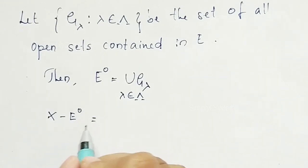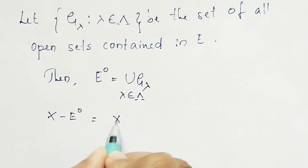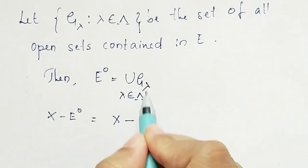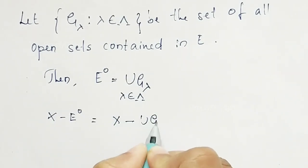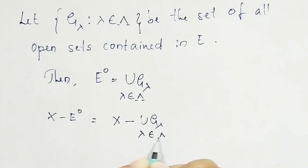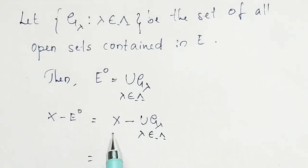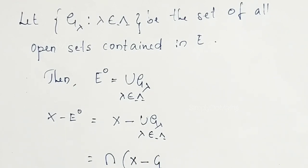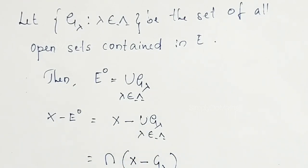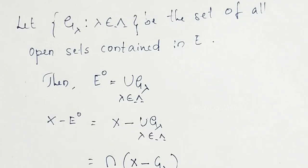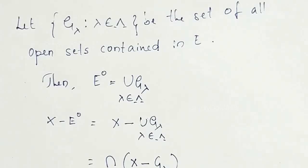Complementing, this will be X minus interior of E. X minus the value of interior of E, which is union of G_lambda where lambda belongs to the index set. Applying De Morgan's theorem, this union can be taken outside, then this union will become intersection of X minus G_lambda, provided lambda belongs to the index set. Call this equation 1.